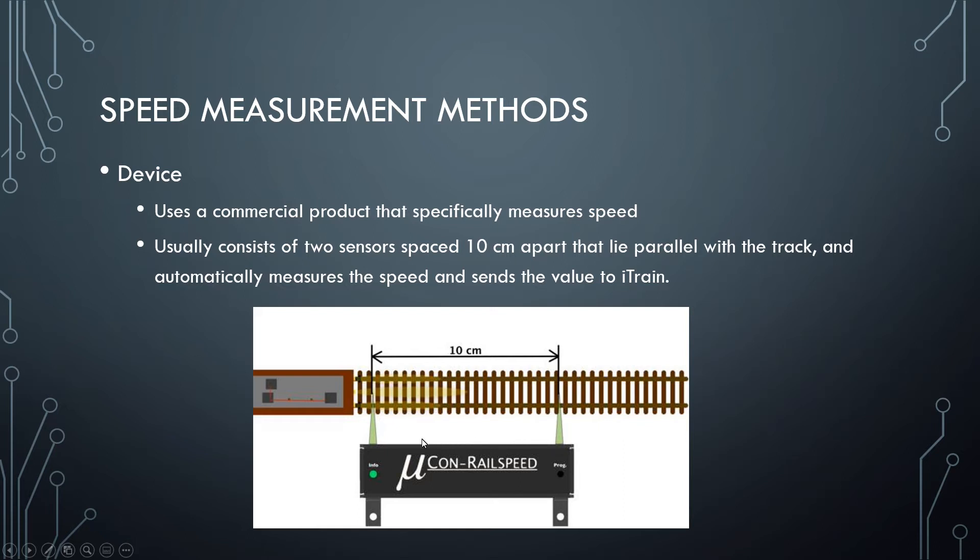They automatically measure the speed and send the value to iTrain. This is only one example of a number of different types of commercial units that you can purchase specifically for measuring the speeds of your locos. The iTrain user manual gives a list of the commercial units that it supports.